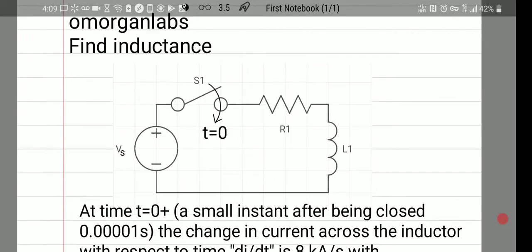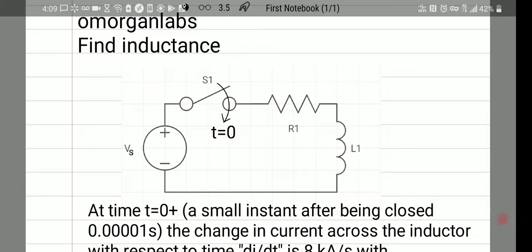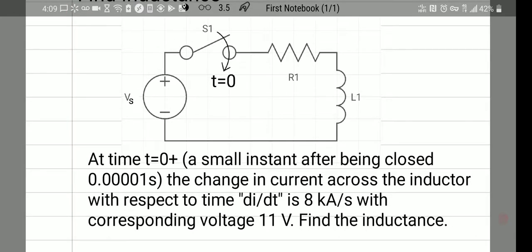Here's our circuit. Time t equals zero, which is a small instant after being closed. The changing current across the inductor with respect to time, di dt, is 8 kilo amps per second. The corresponding voltage is 11 volts. Find the inductance.